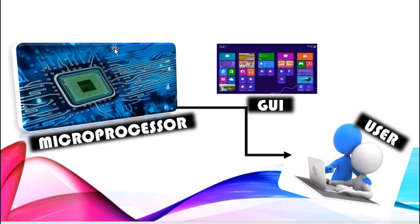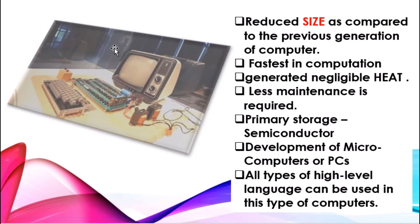Features of the fourth generation include a reduced size — smaller than previous generations — and very fast computation producing a negligible amount of heat. These computers required less maintenance. They also used high-level languages such as C#, C++, Java, and other high-level languages. The disadvantages were that the design and fabrication of the microprocessor was very complex, and air conditioning was still required due to the presence of integrated circuits.